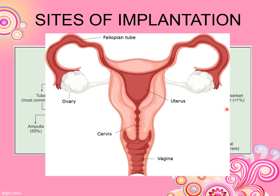You can see in this image the fallopian tube and uterus. Extra-uterine and intra-uterine sites are shown. The intra-uterine sites include the cervix and the cesarean scar. The fallopian tube parts include the fimbrial end, interstitial, and isthmic portions.